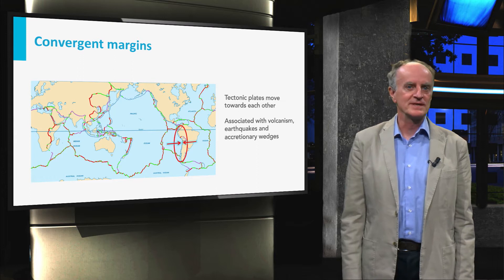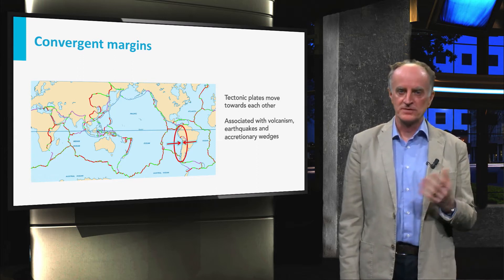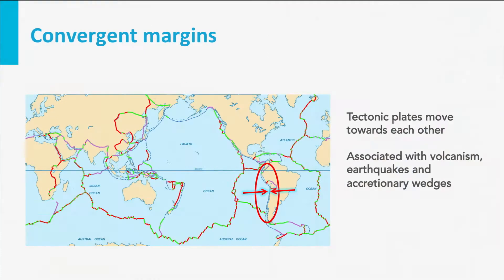A well-known example is between the South American and the Nazca plates. The first is continental and therefore light, the second is oceanic and thus heavy. In these cases, the oceanic plate descends underneath the continental plate. These are subduction zones.